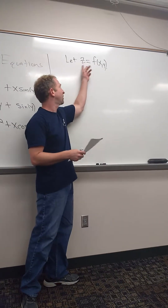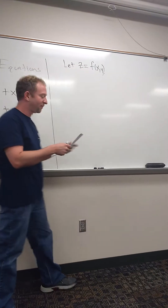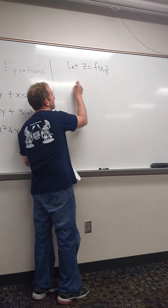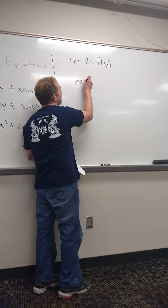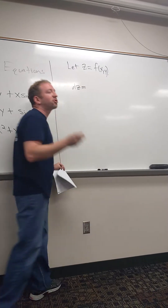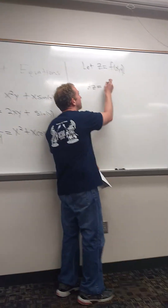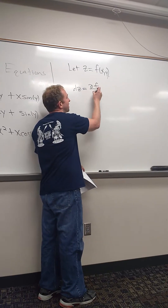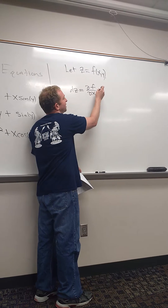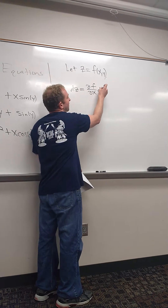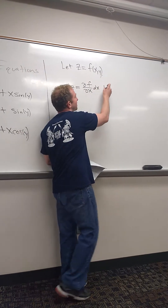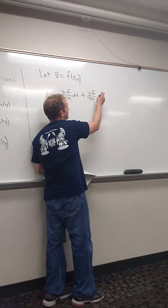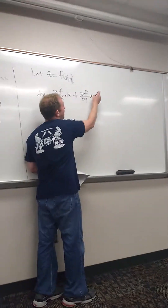I'm going to have two variables — well, three, I guess, because there's z. So dz, this is called the total differential. It's del f del x dx plus del f del y dy.